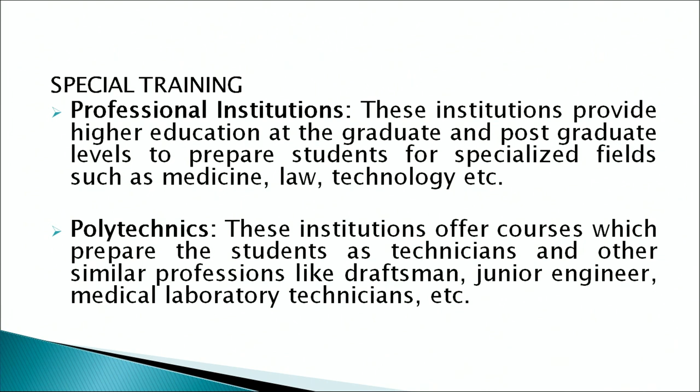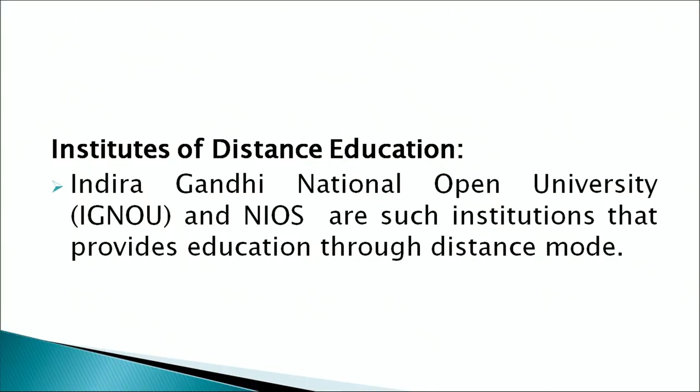We also have institutions called polytechnics, which offer courses that prepare students to become technicians and professionals like draftsmen, junior engineers, and medical laboratory technicians. Other than professional institutions and polytechnics, we have institutions in our country that provide education through distance education. Two such institutions are Indira Gandhi National Open University (IGNOU), which provides higher level education, and NIOS — the National Institute of Open Schooling — through which you are studying this very lecture in the senior secondary psychology course.